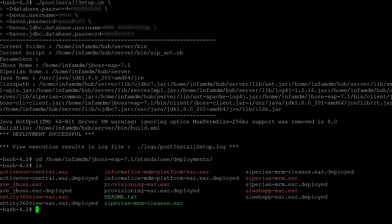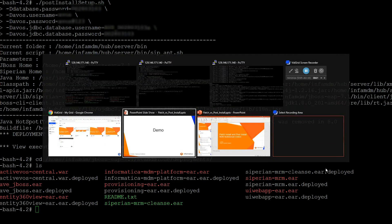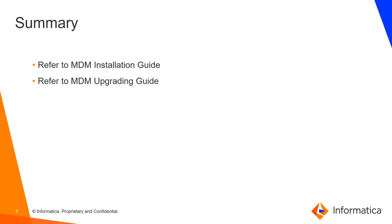All the ARs are deployed, so we are good to go. In summary, patch install and post install is a final check for you to deploy all the AAR packages after installation. One condition for patch install and post install to work is that the JBoss application server, or whatever application server you are using, is up and running. For more details, please refer to the MDM installation guide or the MDM upgrading guide.